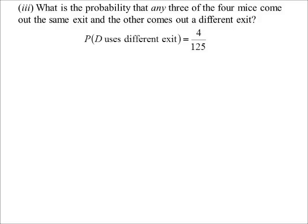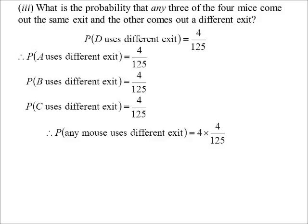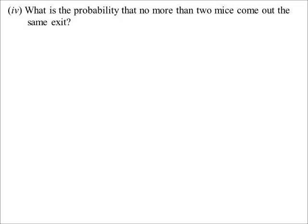What is the probability that any three of the four mice come out the same exit and the other mouse comes out a different exit? We just worked out the probability that D uses a different exit is four in 125. Since the mice are equally likely, the probability that A, B, or C uses the different exit is also four in 125 each. So the total probability is 4 × (4/125) = 16 in 125.